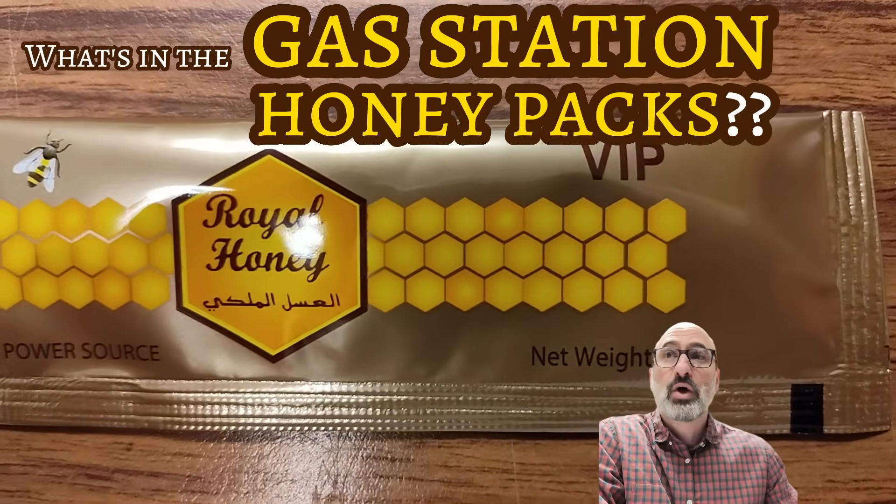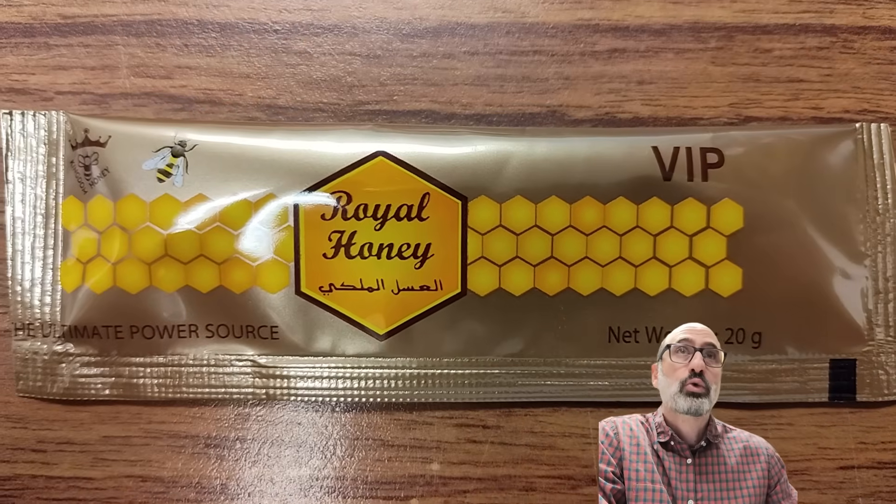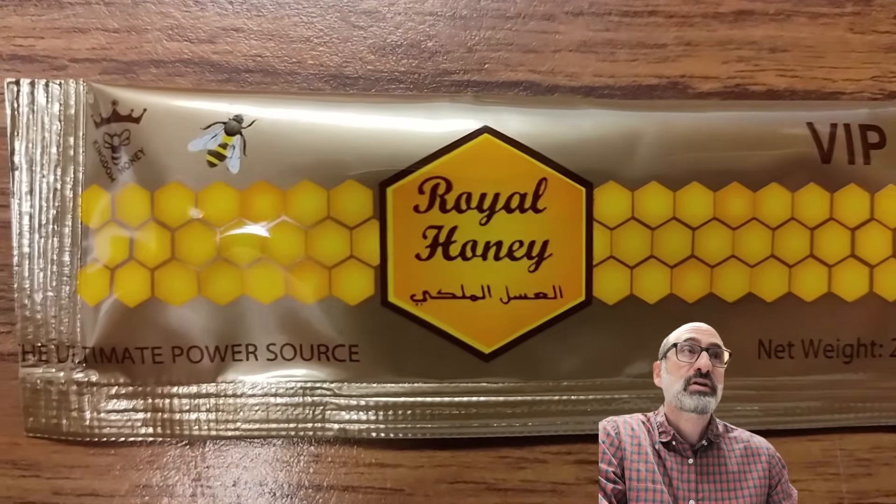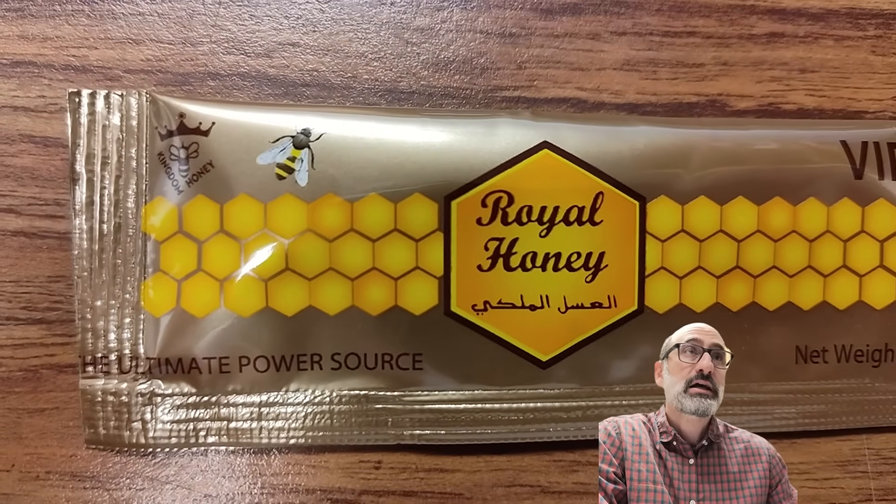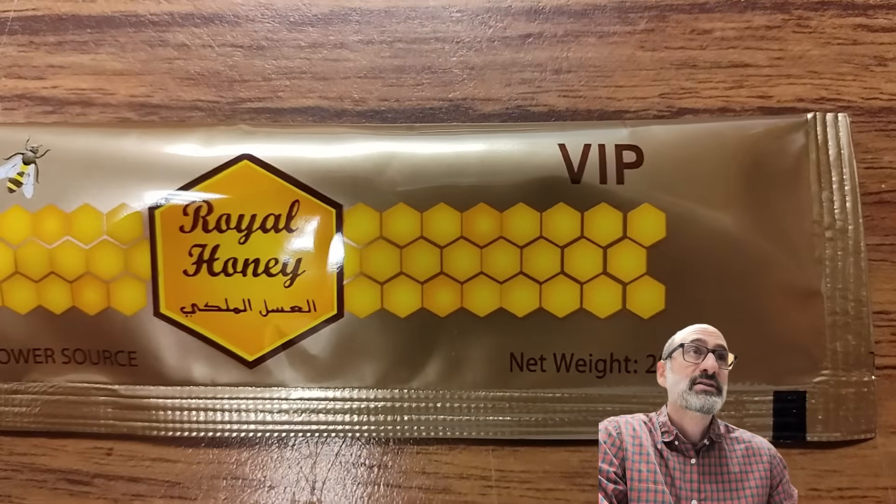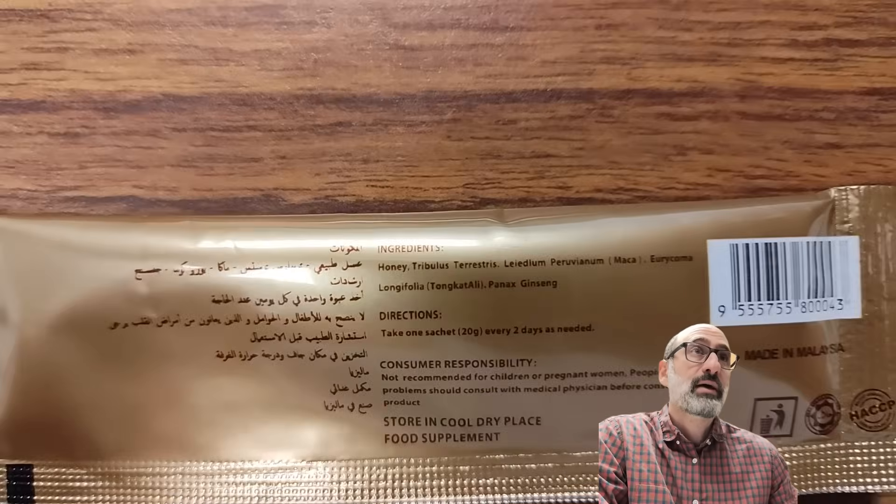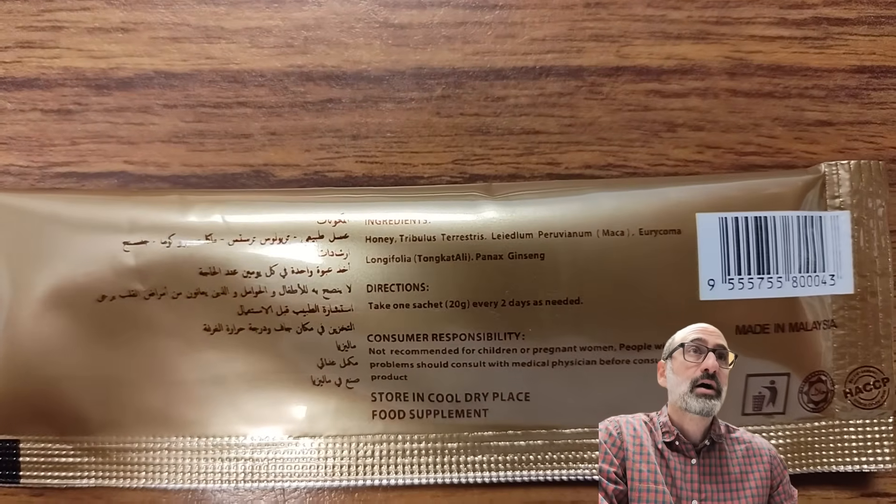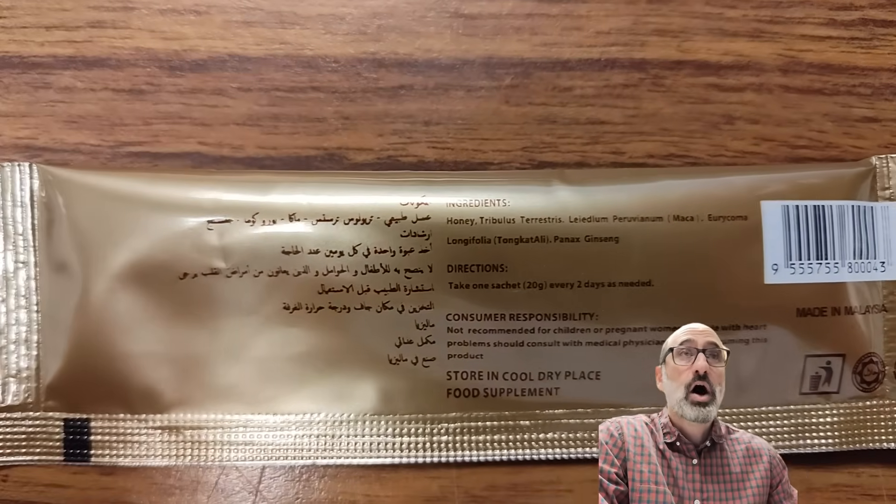And so these Honey Packs, really interesting. They're called Royal Honey Ultimate Power Source, and they have 20 grams of honey. But then they also have all these herbs, supposedly, in them, like ginseng and maca root and tongkat ali.